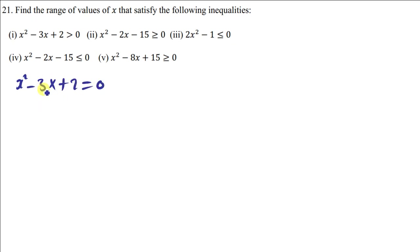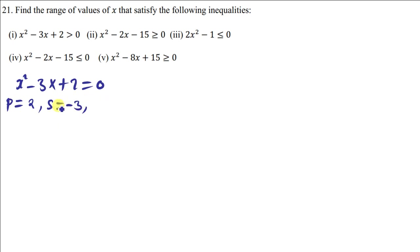I'm going to factorize this equation. The product is found by multiplying the coefficient of x squared and the constant: 2 times 1 gives 2. The sum is the coefficient of x, which is negative 3. The factors of the product that multiply to give 2 and add to give negative 3 are simply negative 1 and negative 2 — when you multiply them you get positive 2, and when you add them you get negative 3.